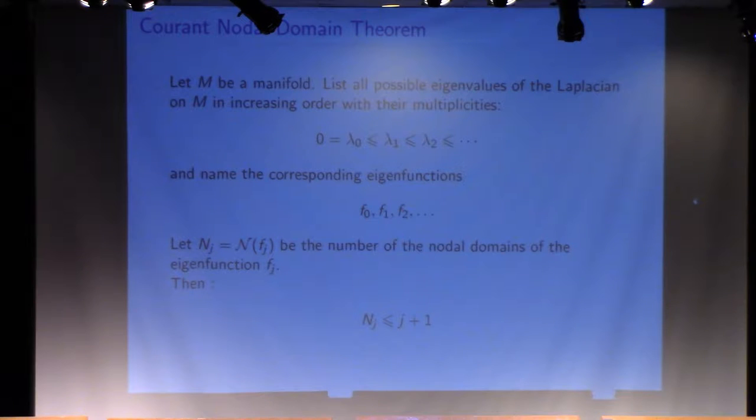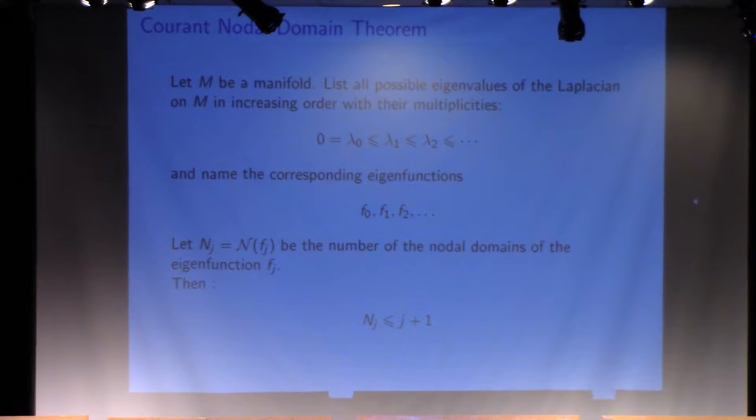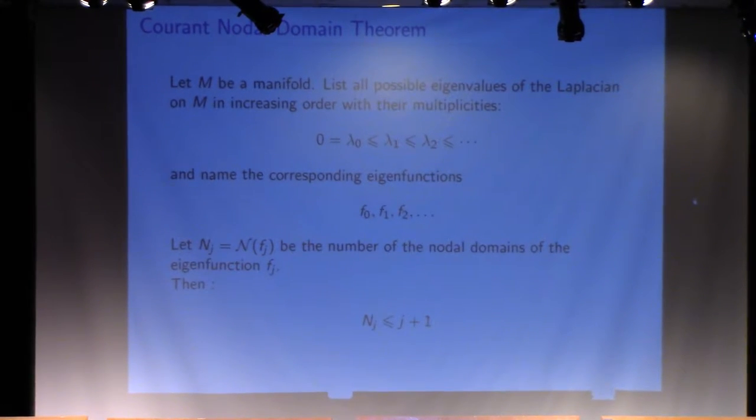If one came up as two different eigenvalues, one could be lambda one and lambda two. We name our corresponding eigenfunctions with the same index. The theorem states that the number of nodal domains for the function f_j is less than or equal to j plus one. So the number of nodal domains is basically bounded by its place in the sequence.